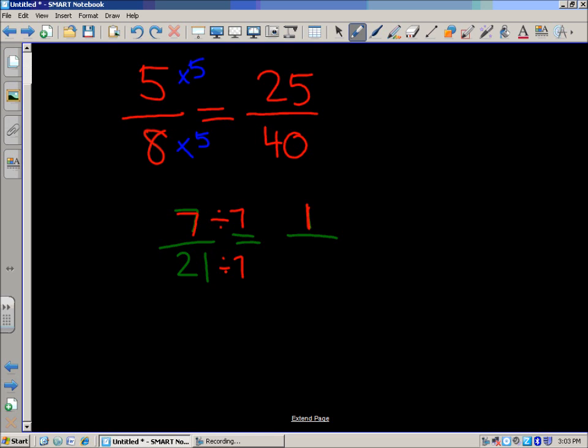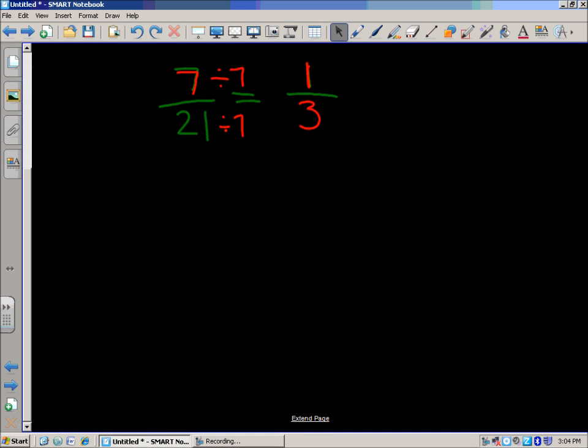So 21 divided by seven equals three. And look at that, you've come up with an equivalent fraction that way too. We were only given the numerator, but we were able to really calculate using our knowledge of fractions to find that missing denominator.